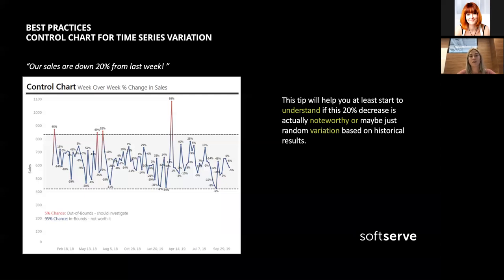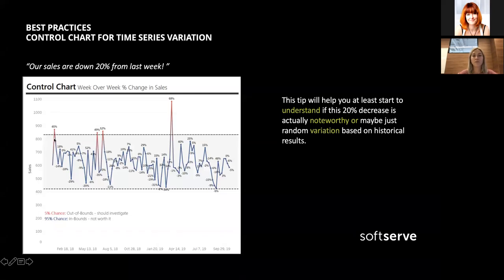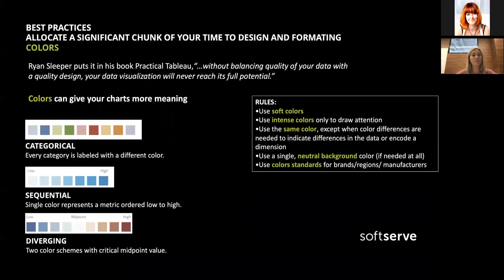What is a control chart and why do we need it? For example, if sales are down 20% from last week — is that bad or normal? To understand this, you need to go back a few weeks and show a trend chart to see whether 20% down is within normal variation or not. It's possible to add a control chart in Tableau, adding lines between which variation is considered normal.